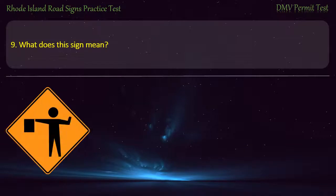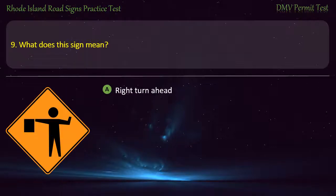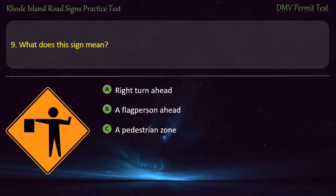Question 9. What does this sign mean? Right turn ahead, a flag person ahead, a pedestrian zone, stop ahead. Answer: A flag person ahead.